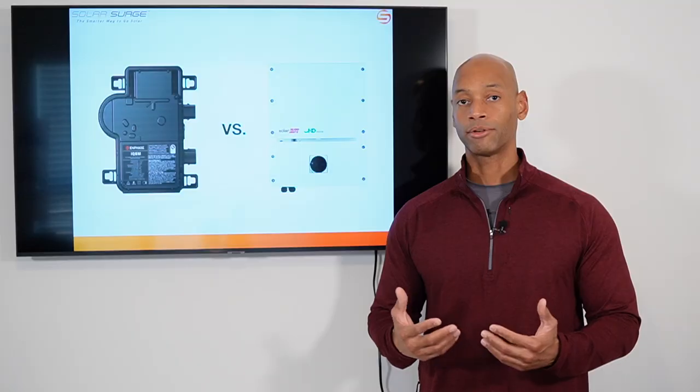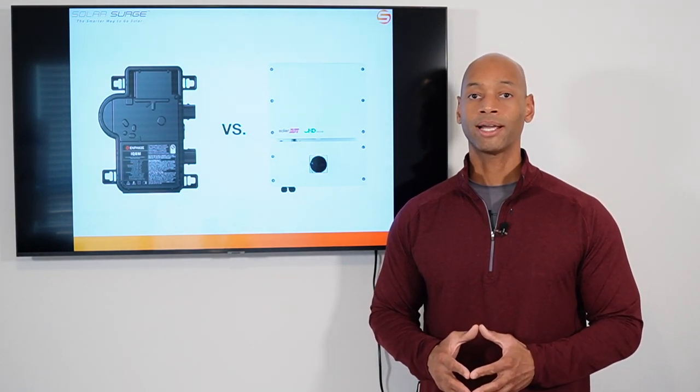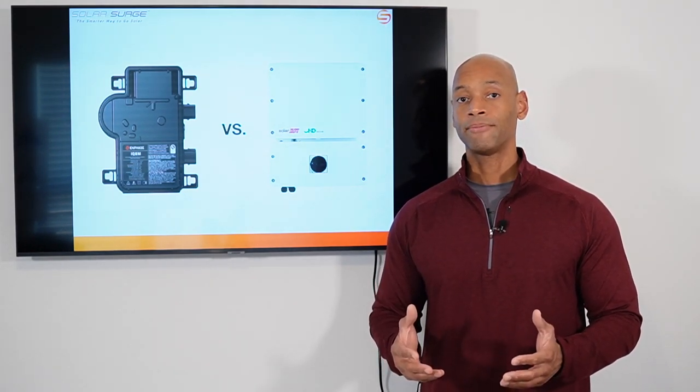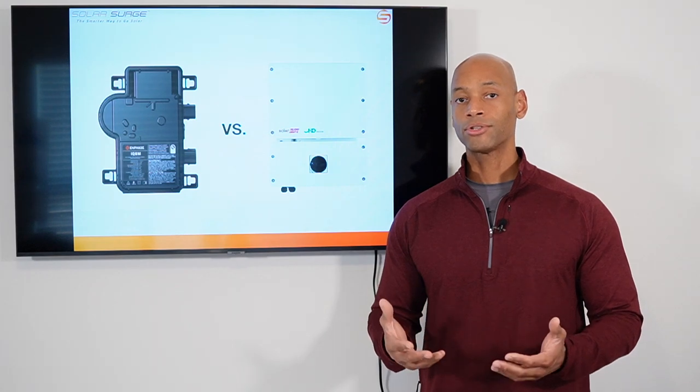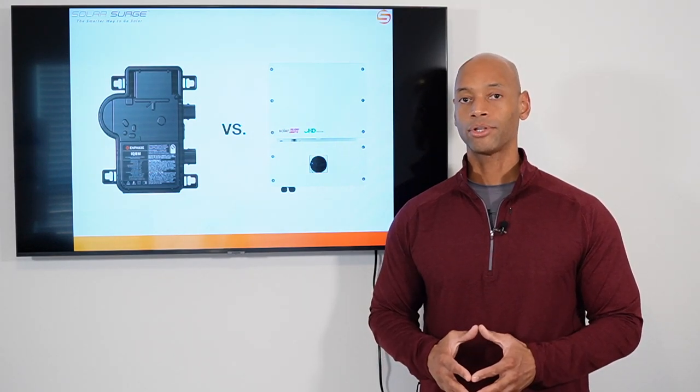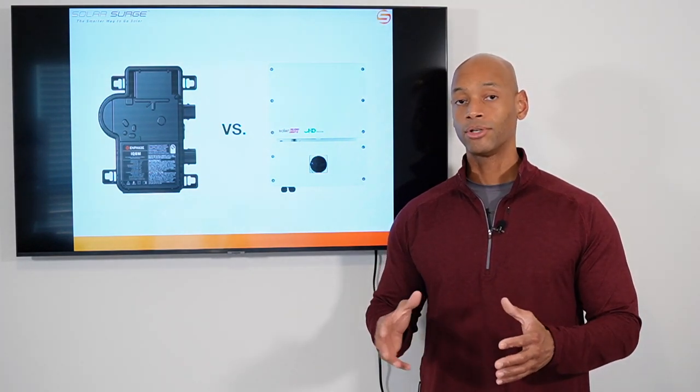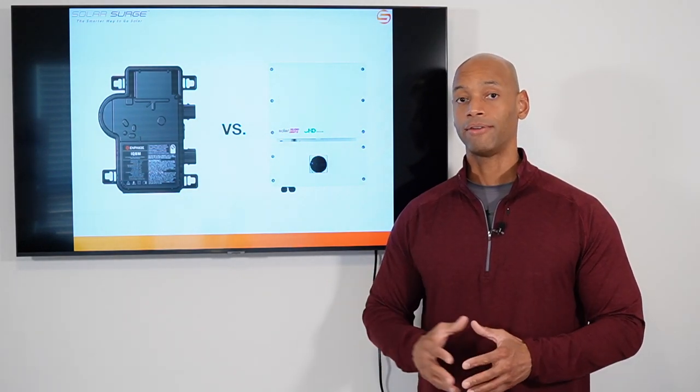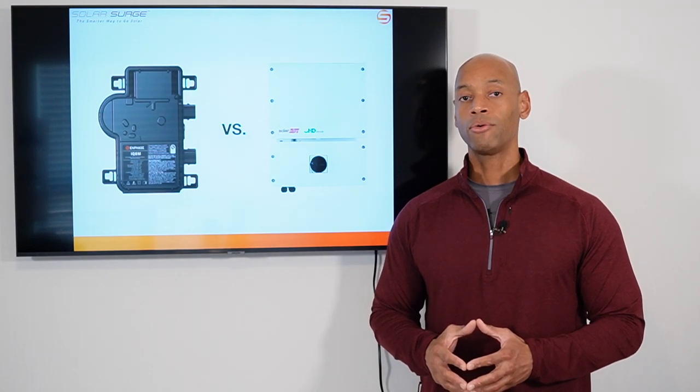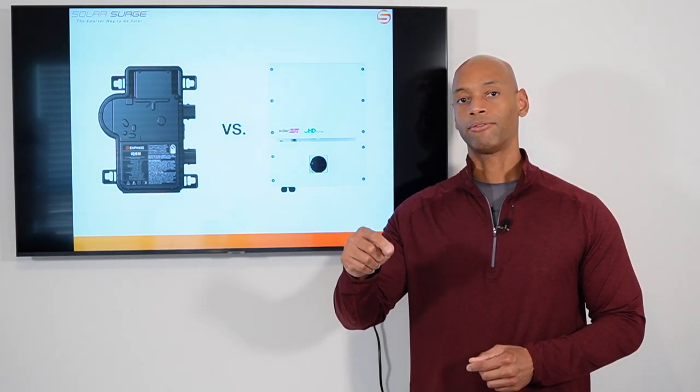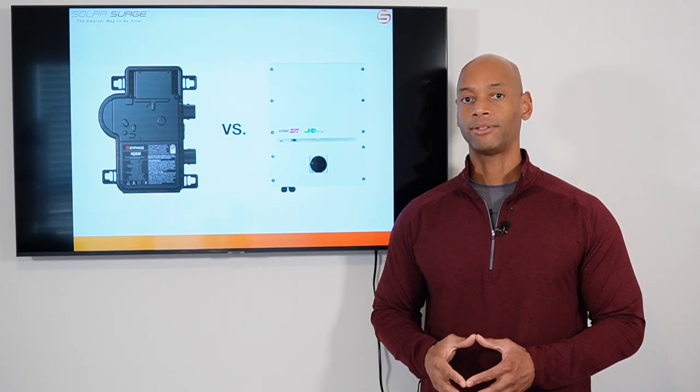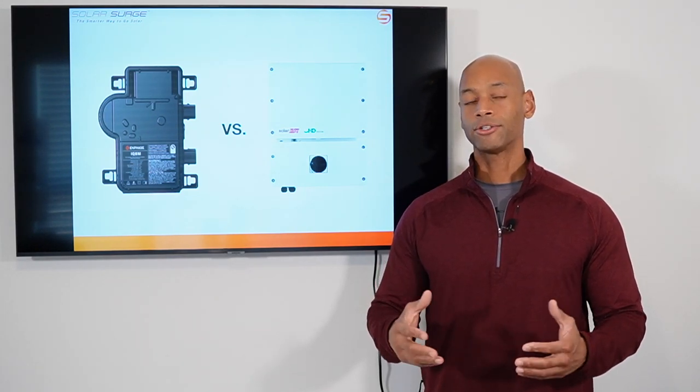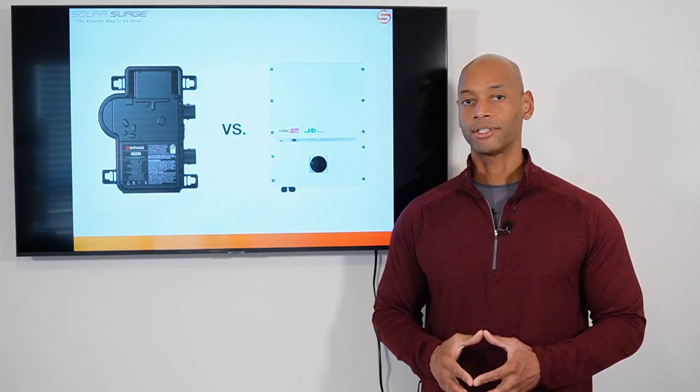So in terms of solar panel performance, this was a big drawback. The other issue was that there was no way for the user to monitor each individual solar panel. Typically you could log in and look at the overall power input and output of the string inverter, but there was no way to drill down and look at performance down to the per solar panel level. So these were the two major drawbacks of the string inverter system.